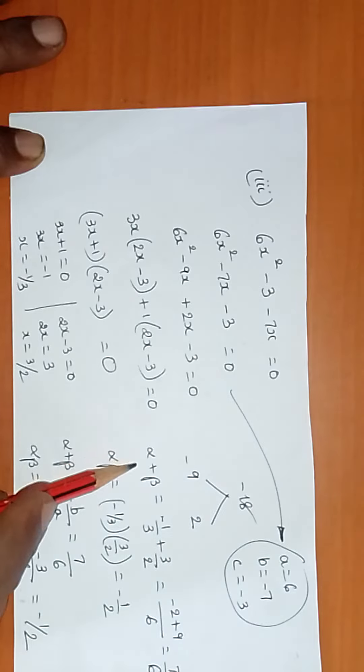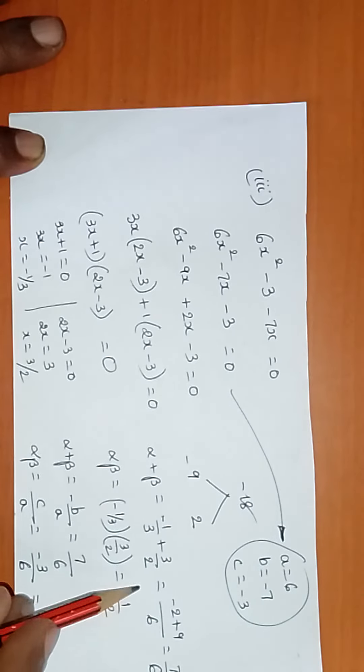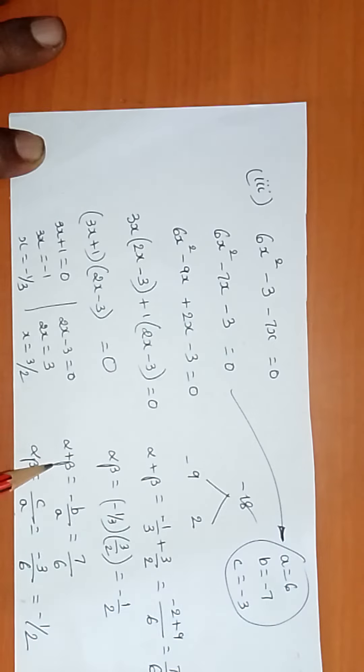Sum of the roots, α + β = -1/3 + 3/2, which gives you 7/6. Product of the roots is -1/2. Sum of the roots is -b/a, which is 7/6, and product of the roots is c/a, which equals -1/2.